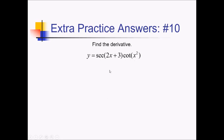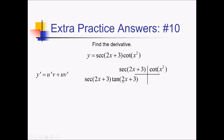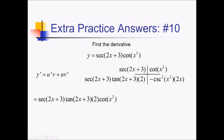To find the derivative of this function, I need the product rule: u prime v plus uv prime. Box and ribbon time — we've got secant of 2x plus 3 and cotan of x squared. The derivatives will both require chain rules. Derivative of secant of something is secant of something times tan of something — so secant of 2x plus 3, tan of 2x plus 3, times the derivative of 2x plus 3, which is 2. Now the derivative of cotan of x squared: derivative of cotan of something is negative cosecant squared of something, the something being x squared, then multiply by the derivative of x squared, which is 2x. Putting it all together with the ribbon, I've got all this stuff in the lower left times cotan of x squared, plus secant of 2x plus 3 times negative cosecant squared of x squared times 2x. And that's done.